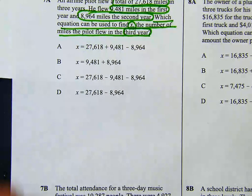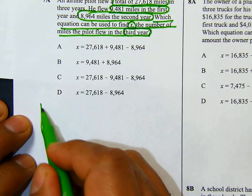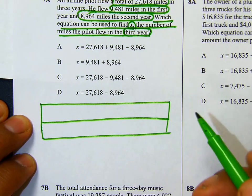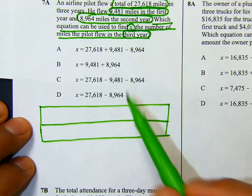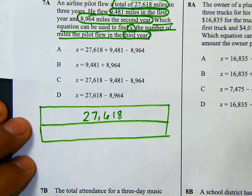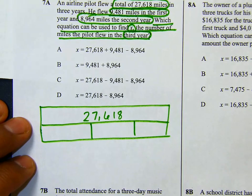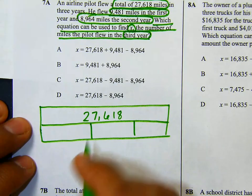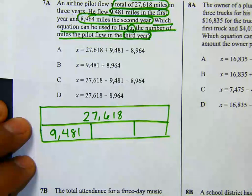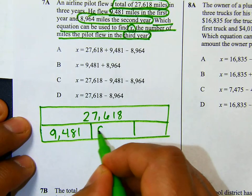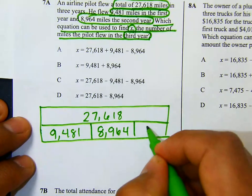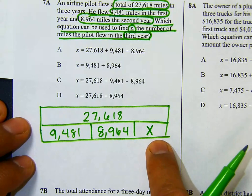We'll create our strip diagram. We have a total — the total miles he flew were 27,618 miles, and it was three years. In the first year he flew 9,481 miles, the second year 8,964 miles, and we want to know how many he flew in the third year. That's x — that's our variable.